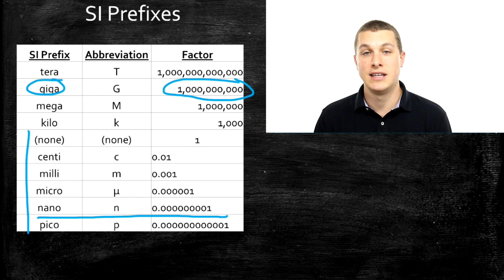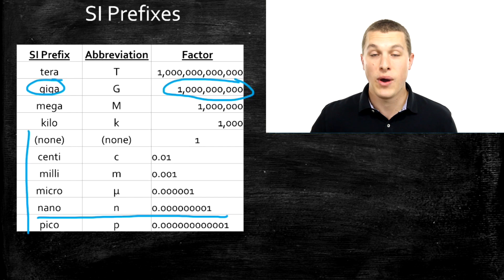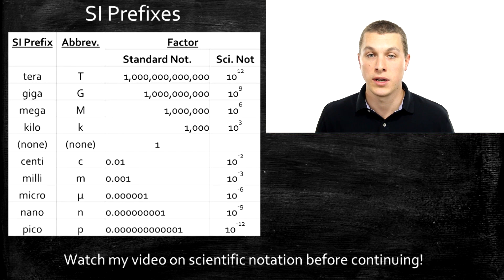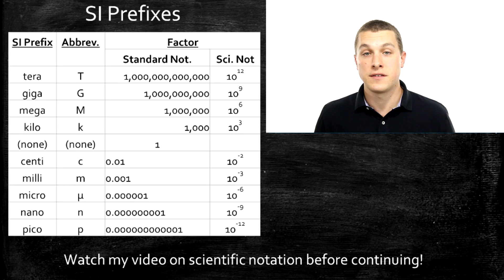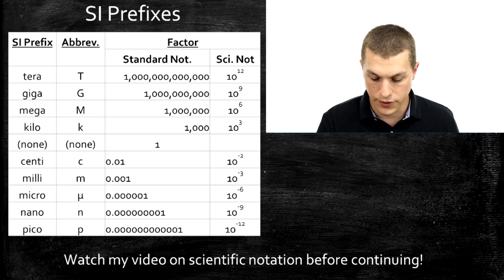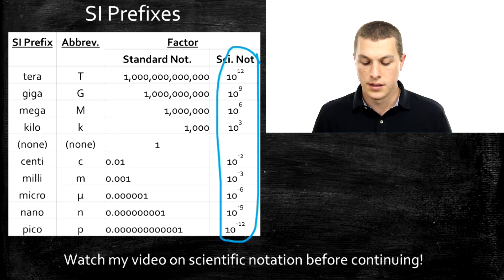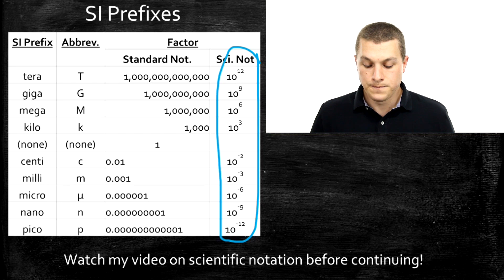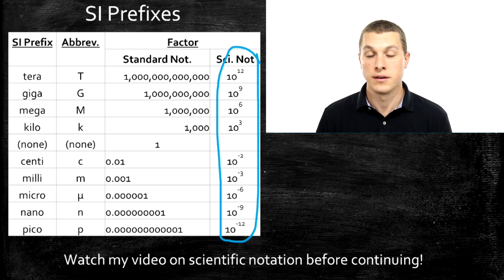If you've watched my video on scientific notation, you know we typically express big numbers with scientific notation. If you haven't seen that video, go back and watch it before continuing — you need to know how to go back and forth between numbers in and not in scientific notation. If we use scientific notation to express those factors, we can see it's a lot easier: instead of writing all those zeros we just put a number in the exponent above ten. That's the way you'll typically see SI prefix tables.